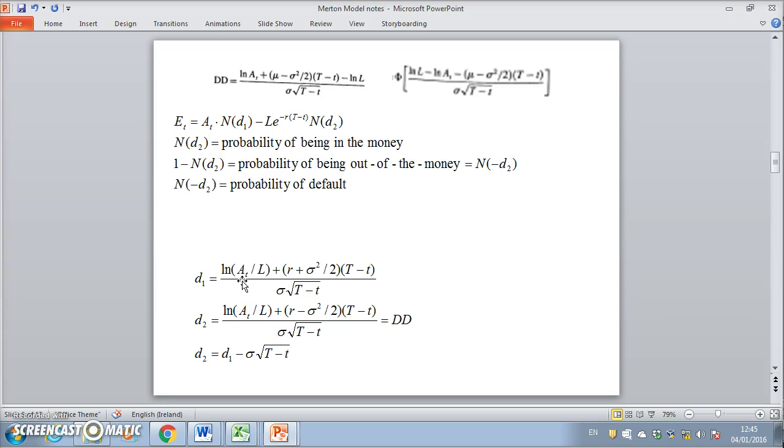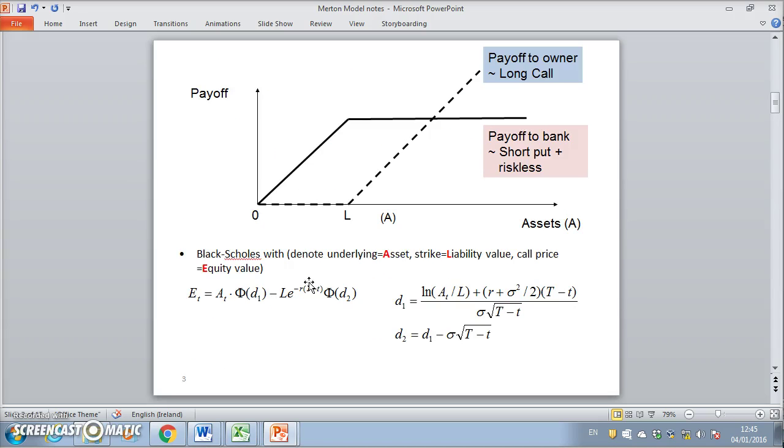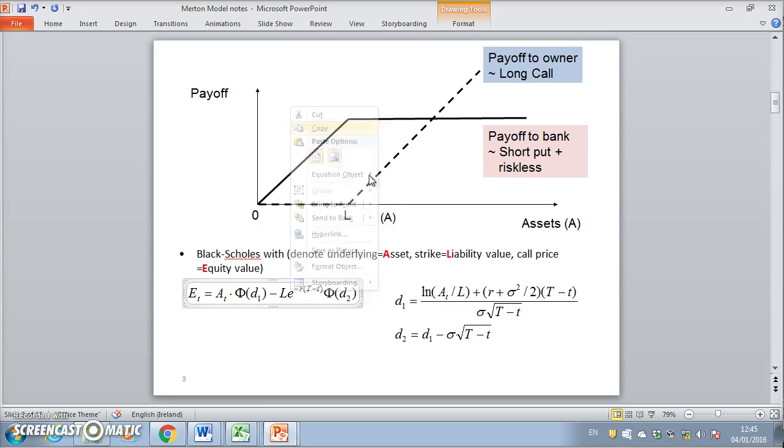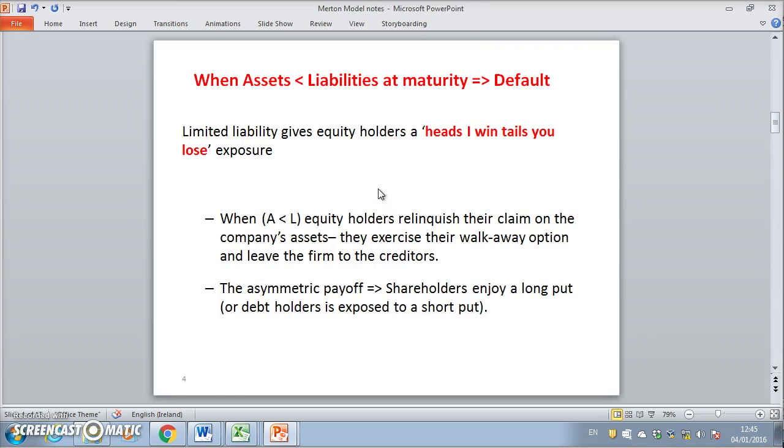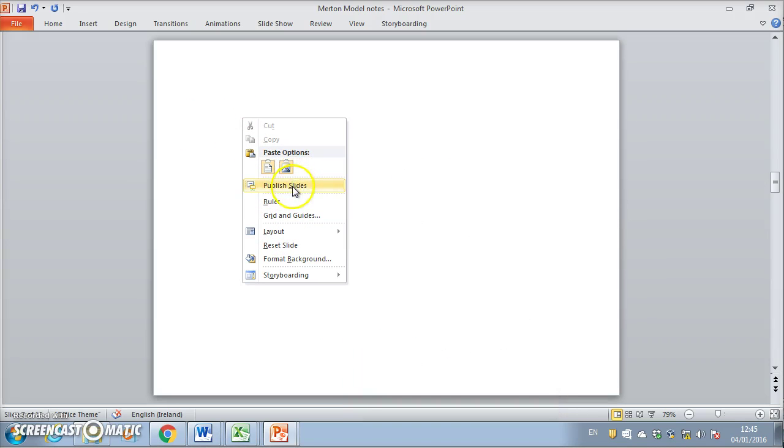So how do we go about measuring assets? One of the approaches embedded in the KMV model is that as a first approximation, we go back to option theory. We look at the value of the equity.